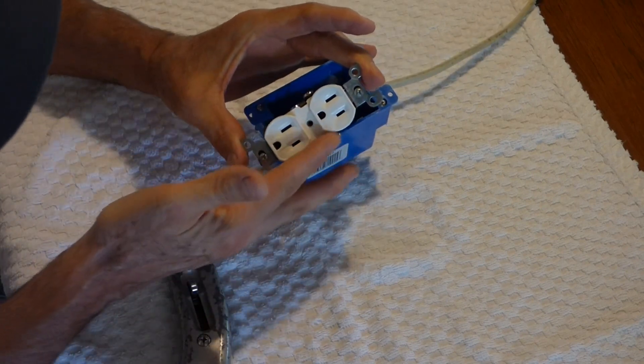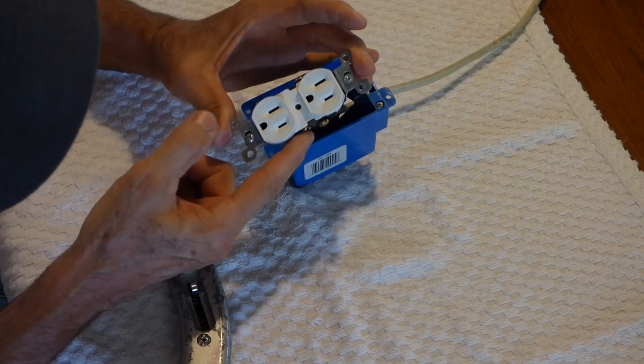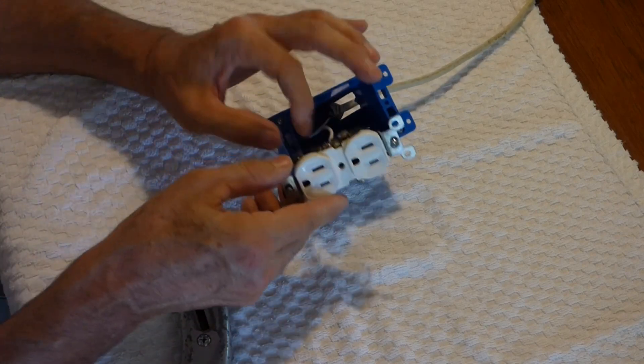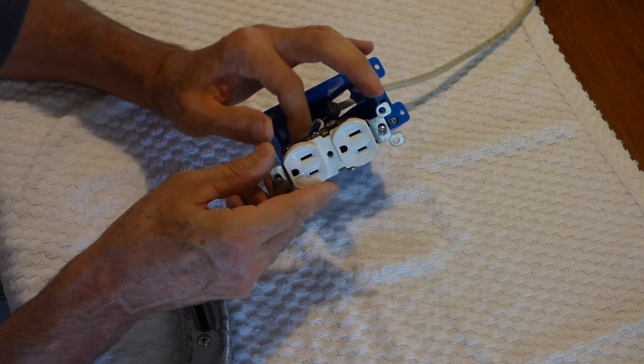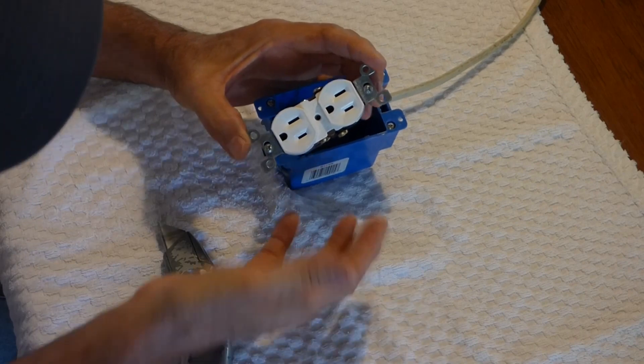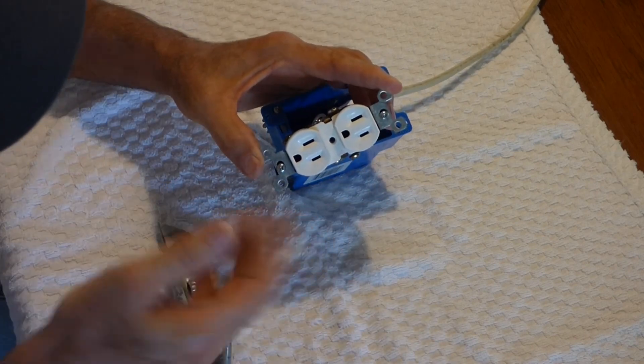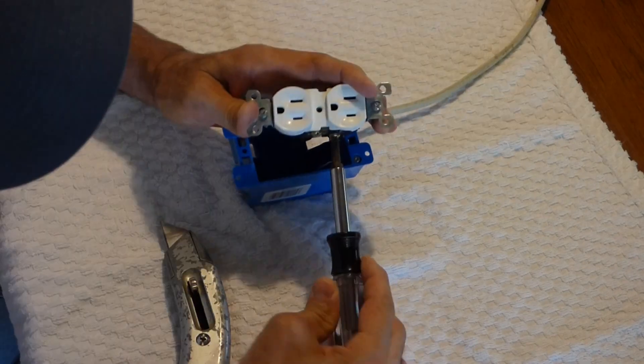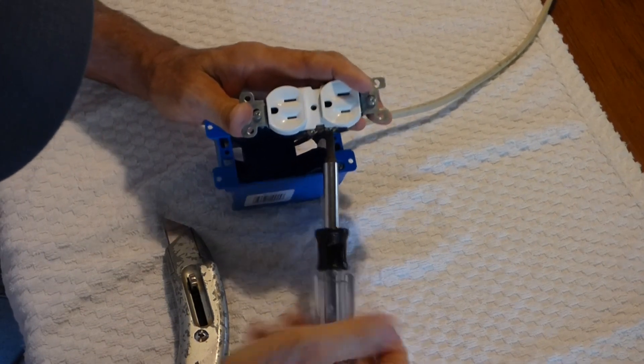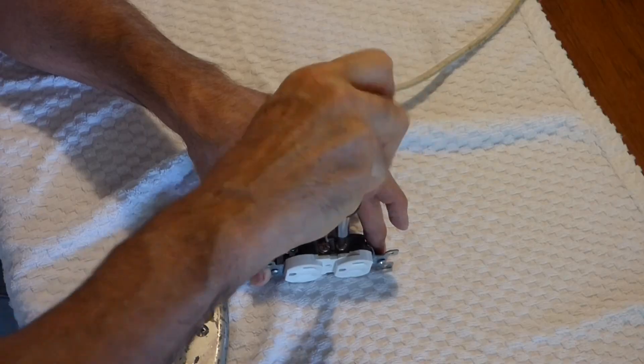The other thing that you want to do is tighten these screws that you're not using down. When they're left like that, they're sticking out. These are tucked in nice. And when those are sticking out, you've got the same problem where they could be shorted out by the ground wire, another wire, if you've got other wires in the box. So it's very important, tighten these down, get them out of the way. That'll save you from problems.